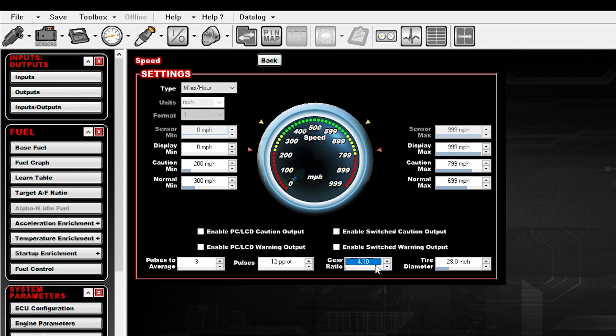Gear ratio again, based on the gear ratio that you have in your vehicle, 410, 373 is a pretty common one. And then tire diameter. So a 28 inch tire, like a 275 60 15 is a 28 inch tire. So you can set things that way. And this will give you a mile an hour.